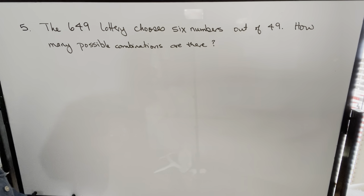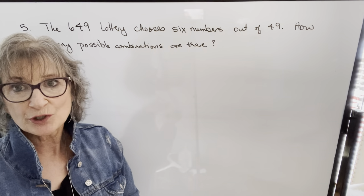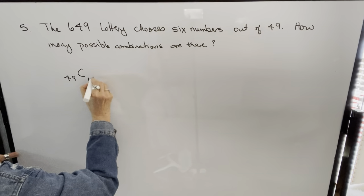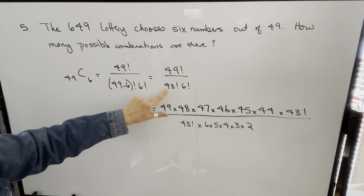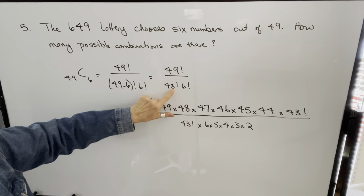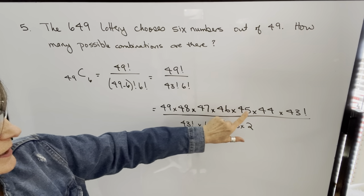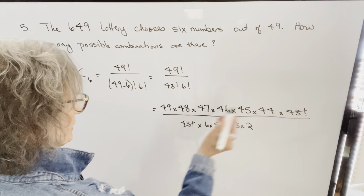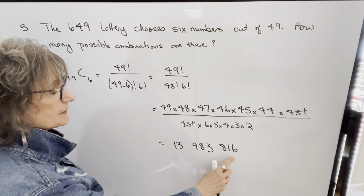The next question says: the 649 lottery chooses 6 numbers out of 49. How many possible combinations of numbers are there? When selecting the 6 numbers, the order doesn't matter — only which numbers are chosen. So because order doesn't matter, this is a combination. We're selecting 6 from 49, giving 49C6 = 49 factorial over 43 factorial times 6 factorial. Expanding: 49 times 48 times 47 times 46 times 45 times 44 times 43 factorial, and the 43 factorial cancels. The number of possible combinations is 13,983,816.